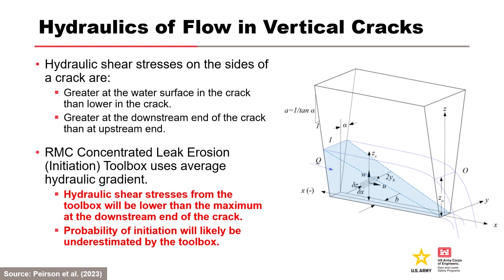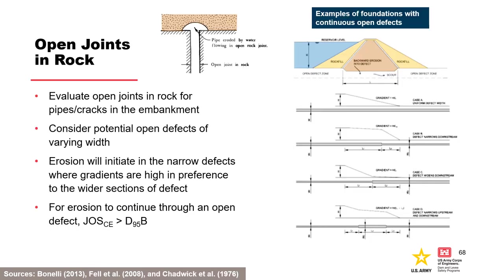The RMC concentrated leak erosion toolbox uses the average gradient method, which gives lower hydraulic shear stresses and therefore lower probability of initiation. The average gradient method is still recommended for conduit-like conditions and poorly compacted layers within an embankment, but not for transverse cracks at the crest. Scour can also occur along continuous open rock defects in the foundation using the same initiation assessment method. For erosion to continue through an open defect, the joint opening size must be greater than the D95 of the adjacent soil, though hydraulic gradients may vary as defect width varies, with erosion initiating in narrower defects where gradients are higher.